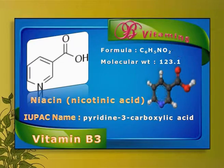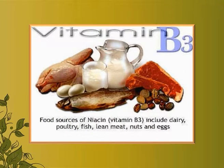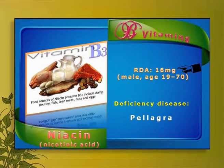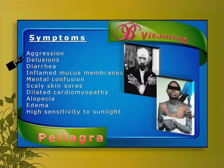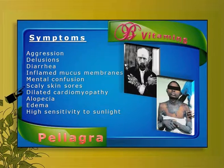Vitamin B3 or niacin has a chemical formula of C6H5NO2 with a molecular weight of 123. Foodstuffs rich in niacin include dairy, poultry, fish, lean meat, nuts and eggs. The recommended dietary allowance is 16 mg, and the major deficiency disease is pellagra. Pellagra is classically described as the disease of four D's: diarrhea, dermatitis, dementia and finally death. A more comprehensive list of symptoms includes aggression, dilated mucous membranes, mental confusion, dilated cardiomyopathy, alopecia and edema.